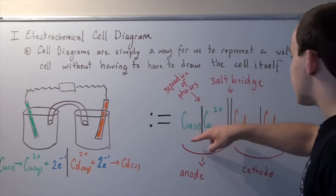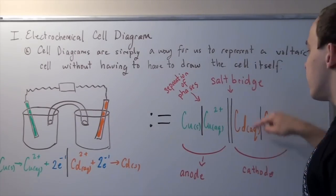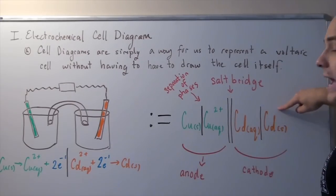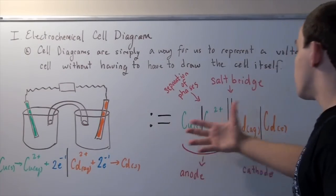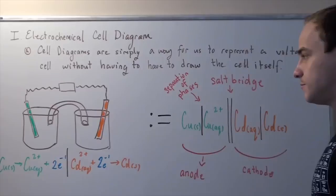These two electrons travel to this side into the cathode. In the cathode, they react with the cadmium forming our cadmium solid. This is how you read the cell diagram for any electrochemical cell.